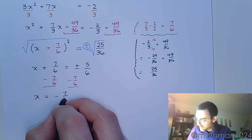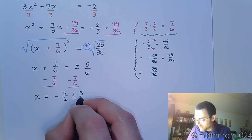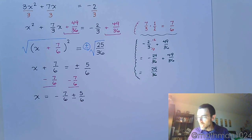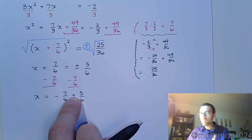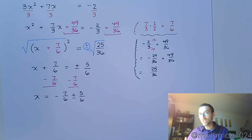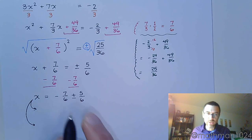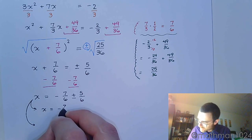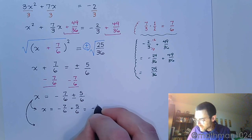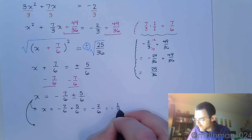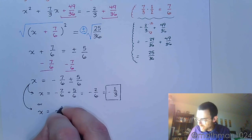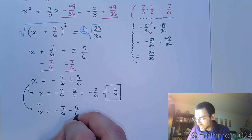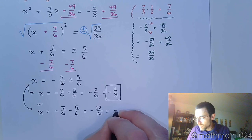So x = -7/6 ± 5/6. Before boxing this answer, notice that since there's no imaginary or radical part, these two fractions can be combined. Separating into two solutions: x = -7/6 + 5/6 = -2/6 = -1/3, which is one solution. The other is x = -7/6 - 5/6 = -12/6 = -2.